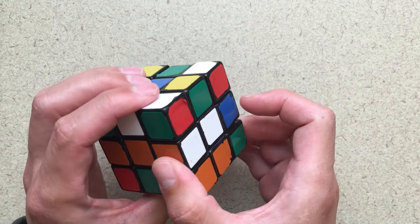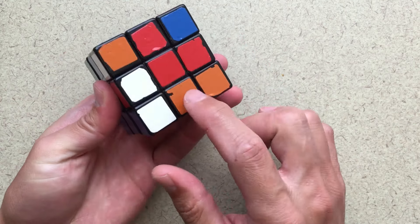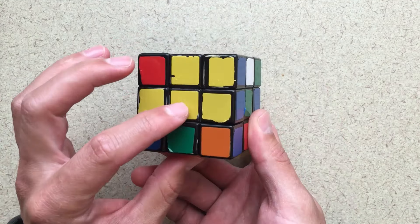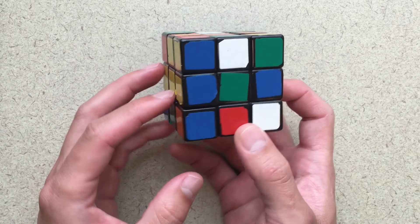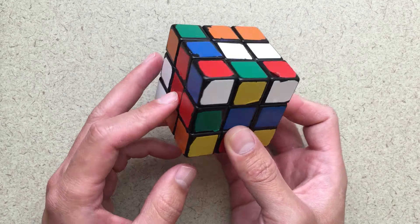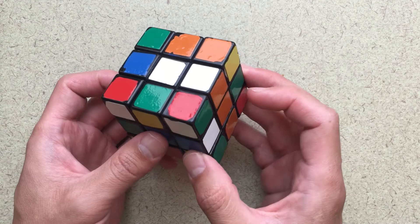So just getting oriented with the Rubik's Cube, the pieces in the middle, they don't actually move. These pieces in the middle, the white will always be opposite the yellow. So white here, yellow here, the green will always be opposite the blue and the orange will always be opposite the red. So these middle pieces don't move.